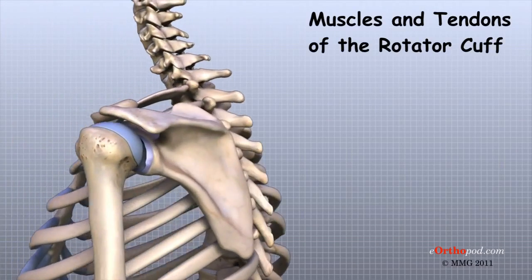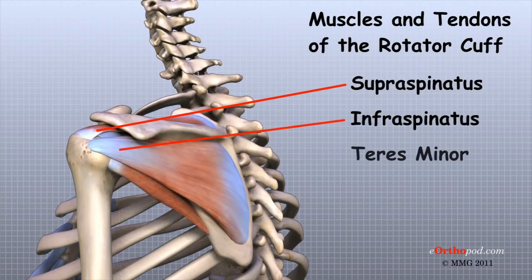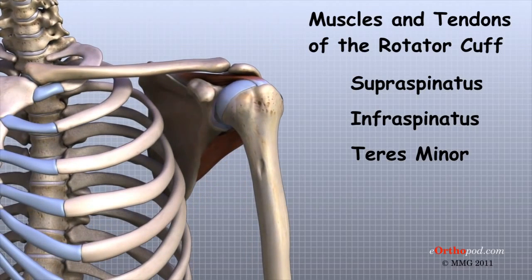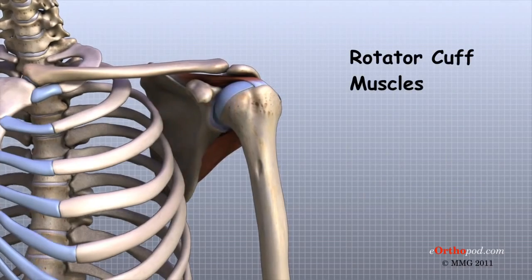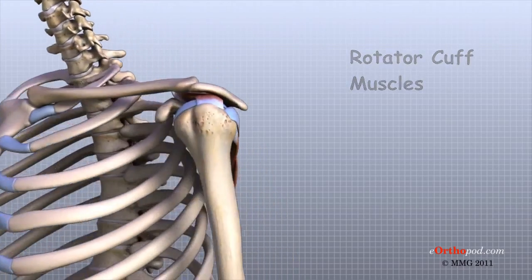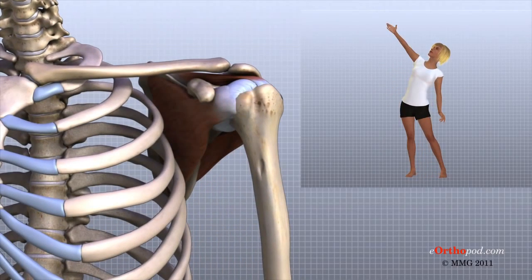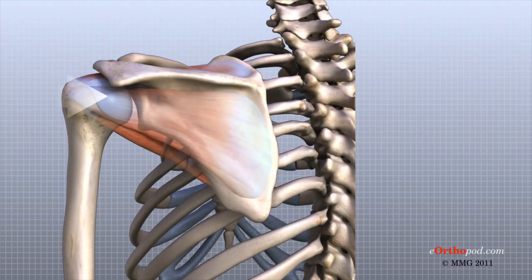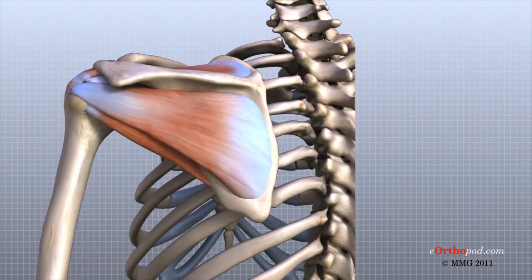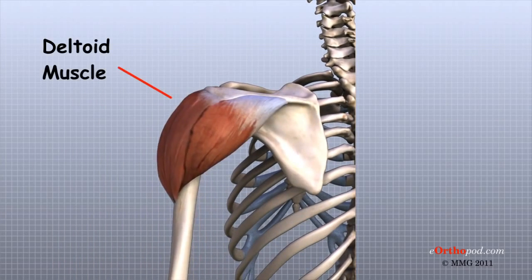Four tendons connect the deepest layer of muscles, the rotator cuff muscles, to the humerus. Just before these muscles attach to the upper end of the humerus, they join together to form a single tendon called the rotator cuff. The rotator cuff muscles lie just outside the shoulder joint and help raise the arm from the side and rotate the shoulder in many directions. They also help keep the shoulder joint stable by contracting and holding the humeral head tightly in the glenoid socket as the humerus moves.